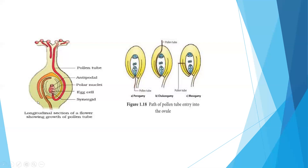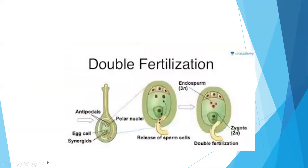One of the male gametes fuses with the egg cell to form the zygote, and this process is known as syngamy. The other male gamete fuses with the two polar nuclei and forms the triploid nucleus or primary endosperm nucleus, and this process is called triple fusion. Both the male gametes released by the pollen tube are involved in fertilization, and this involvement of both gametes during fertilization is called double fertilization.